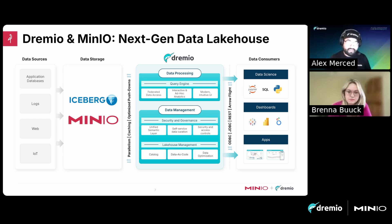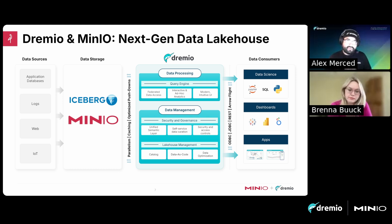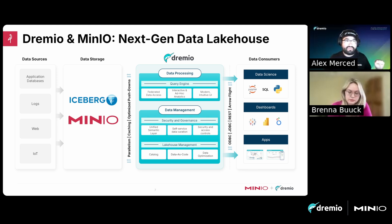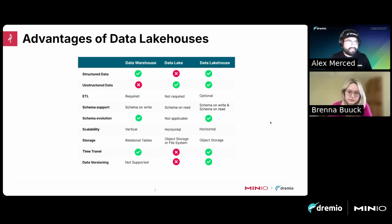Dremio has first-class support for Apache Iceberg tables, but can also query CSV, JSON, and Parquet files, as well as data in databases and data warehouses, allowing you to query all that data in one place. Dremio goes a step further by providing management features for Iceberg tables — automatically managing, optimizing, and cleaning up tables. It also provides an integrated catalog with Git-like features that allows you to isolate ingestion work and create zero-copy experimental environments to develop and work on your data.